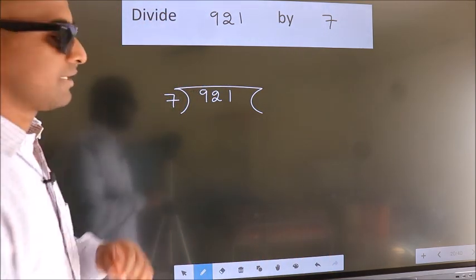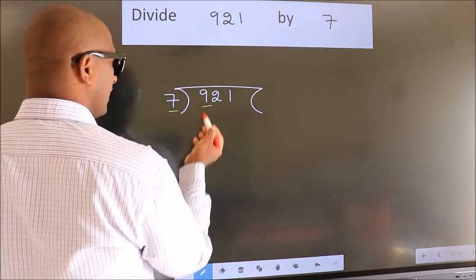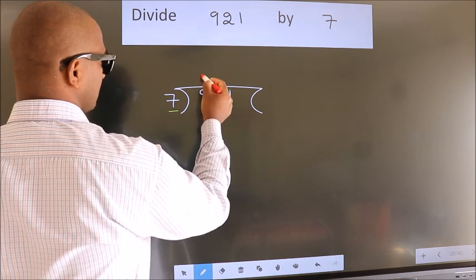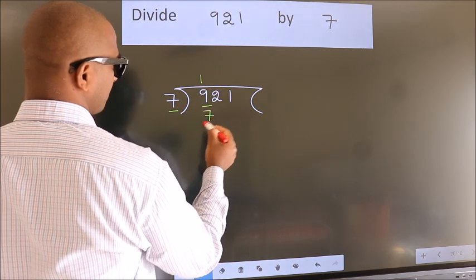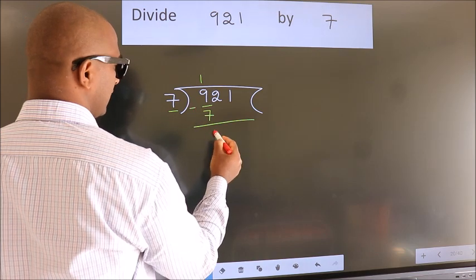Next, here we have 9, here 7. A number close to 9 in 7 table is 7 once 7. Now we should subtract. We get 2.